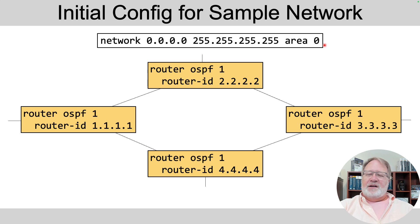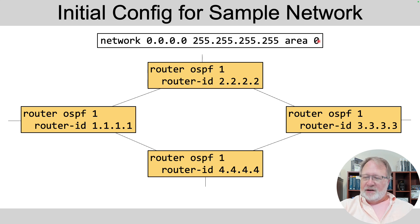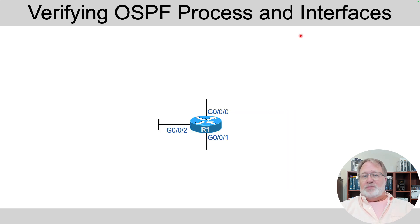This is the convention for configuring a match-all-interfaces bit of logic, with area zero at the end — meaning on each of the four routers, each router should match every interface no matter what its IP address is, and enable OSPF in area zero. So I'll get some show command output from that network, like from router R1.